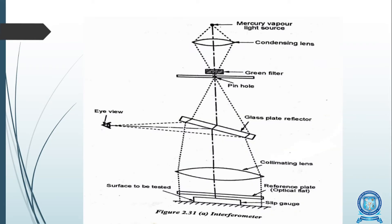We already studied this in the second unit. There is a mercury vapor light source and a condensing lens which is used to condense the light. A green filter clears unwanted particles and moves the light into a pinhole. A reflector reflects the light source, which then moves to another point via the collimating lens. The collimating lens connects all the light and directs it to a reference plate, slip gauge, or surface to be tested.